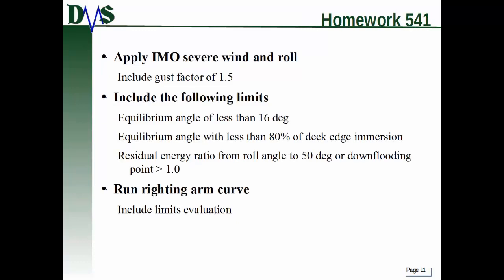We're going to practice using the IMO wind criteria. Homework number 541: apply the IMO severe wind and roll criteria, include a gust factor of 1.5, and encode the following limits — an equilibrium angle of less than 16 degrees, an equilibrium angle that has less than 80% of deck edge immersion, and the residual energy ratio from the roll angle to 50 degrees or down-flooding point must be greater than 1. Look through the GHS help file to see exactly how to code that in — the last one is probably the major tricky one. Then run your righting arm curve and include limits evaluation.